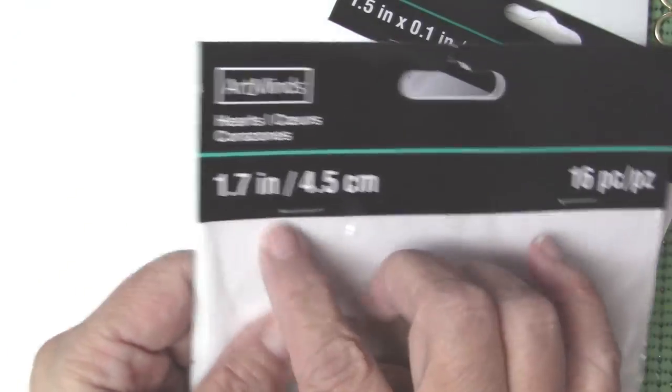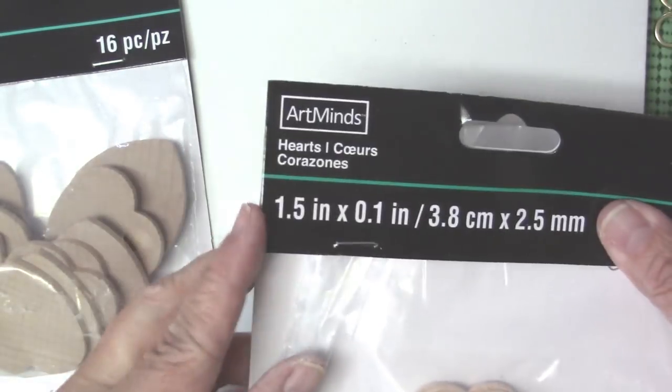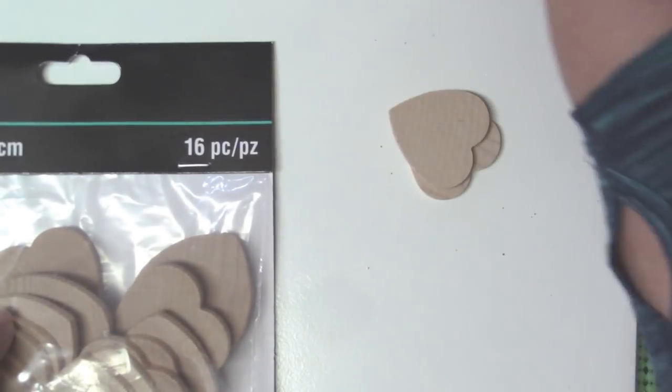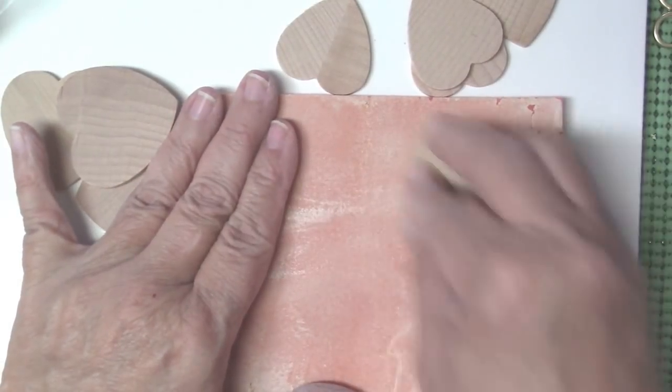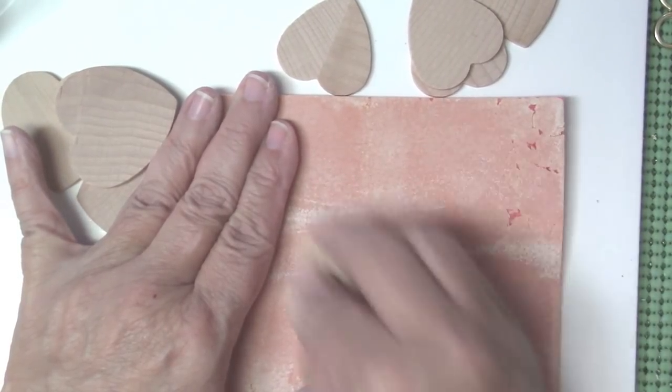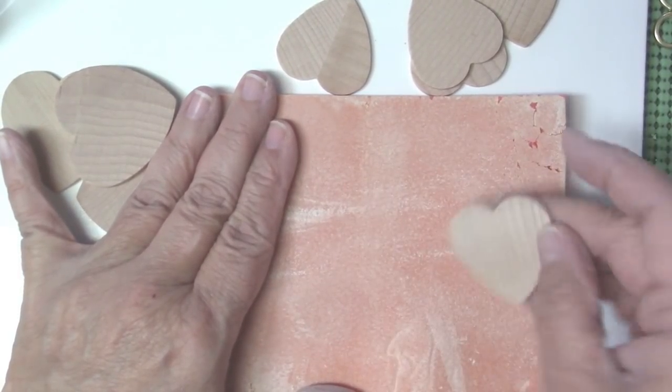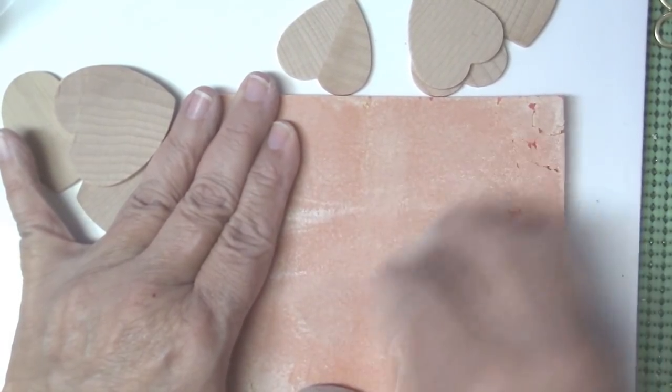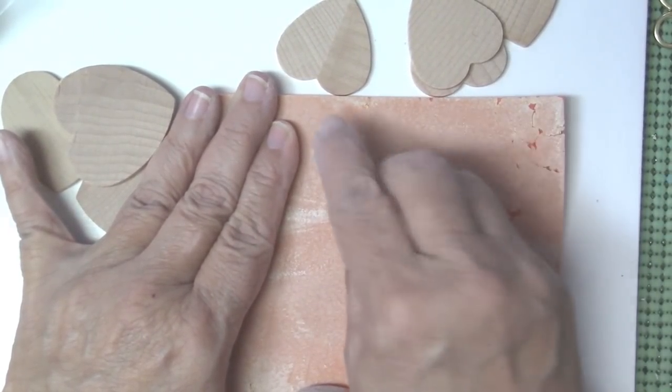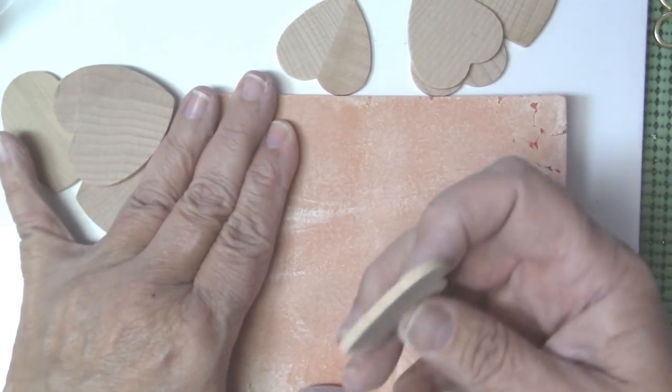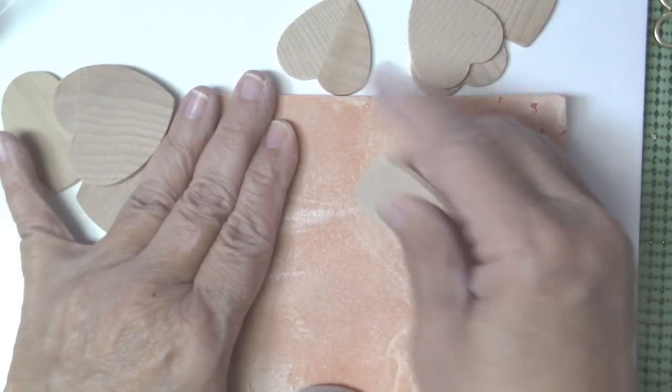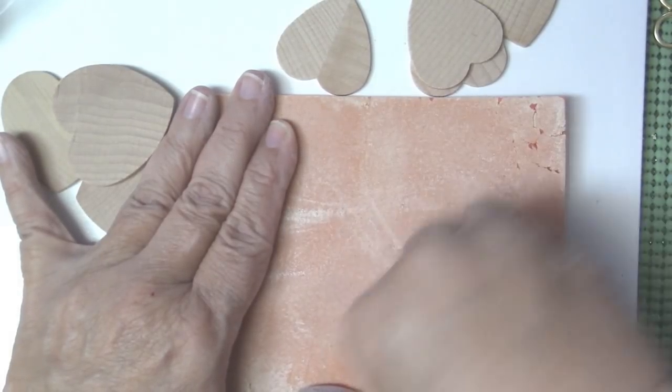I'm going to be using these wood hearts cutouts. They're one and a half and 1.7 inches. I'm going to use the 1.5 for this particular project. I do sand them, they're a little bit rough, so I give them a nice sanding, kind of smooth the edge a little bit. Instead of using just regular sandpaper, you could use like the nail buffers. I get them sometimes at the Dollar Tree in the nail section, those little square buffing sponges.